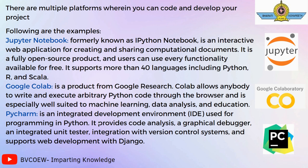Google Colab is a product from Google Research. Colab allows anybody to write and execute arbitrary Python code through the browser and is especially well-suited to machine learning, data analysis, and education. Next is PyCharm, which we are using to build our project. It is an integrated development environment, formerly known as IDE, used for programming in Python. It provides code analysis, a graphical debugger, an integrated unit tester, integration with version control systems, and supports web development with Django.